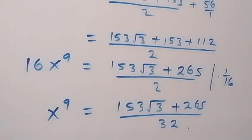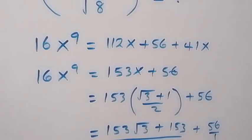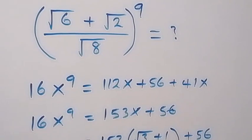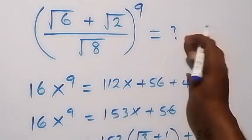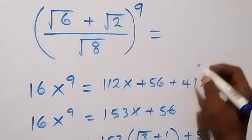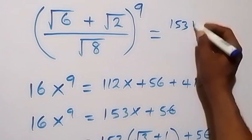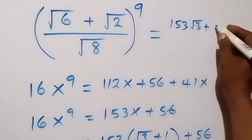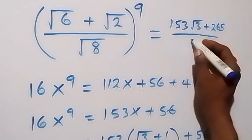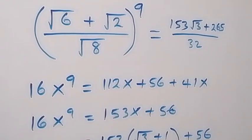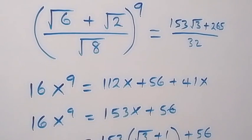X here is the same as the original problem given, so therefore we can conclude that (root 6 plus root 2) over root 2, all raised to power 9, equals 153 root 3 plus 265 over 32. Thank you for watching. Please don't forget to subscribe to this channel, turn on the notification bell, share this video, and put your comment in the comment section. See you next time, bye for now.